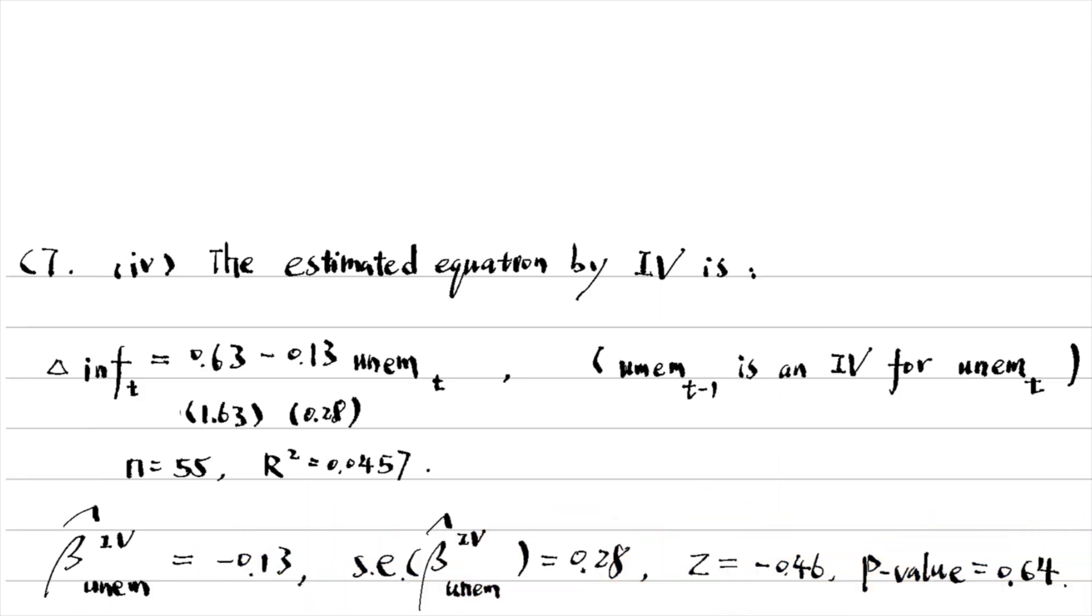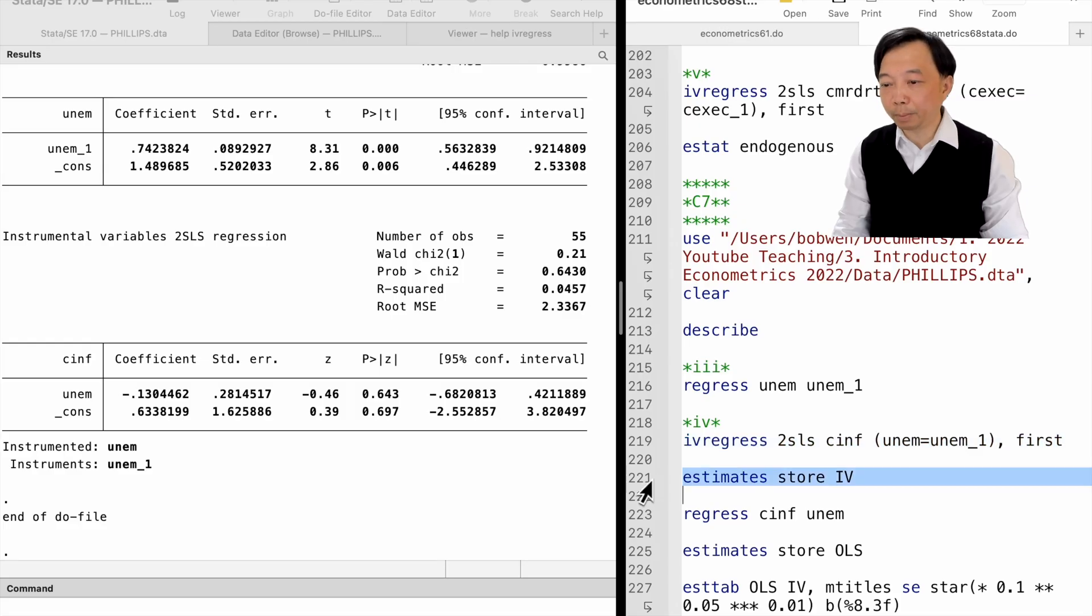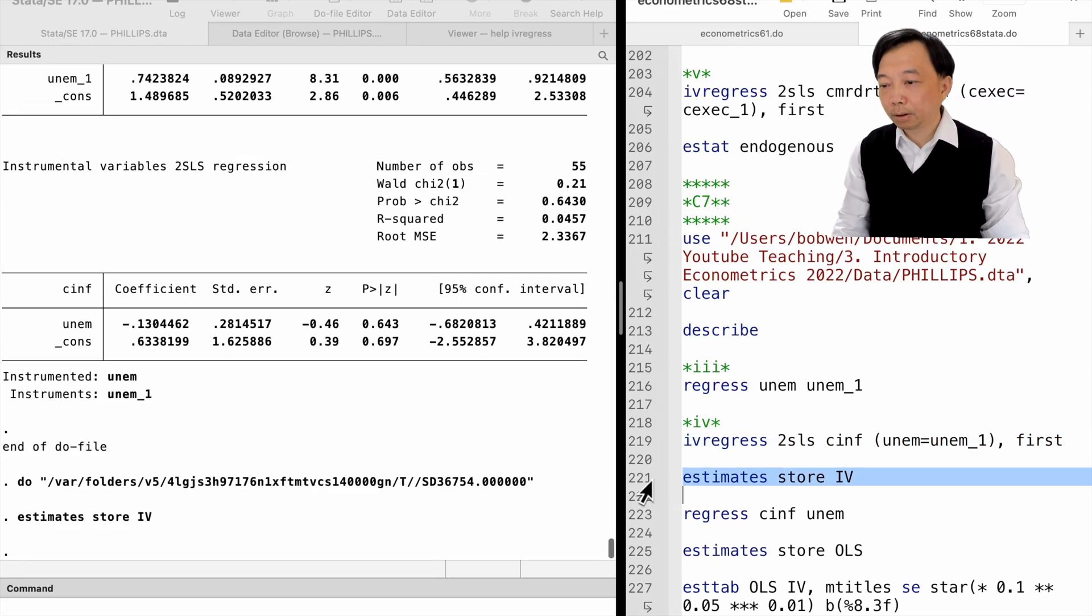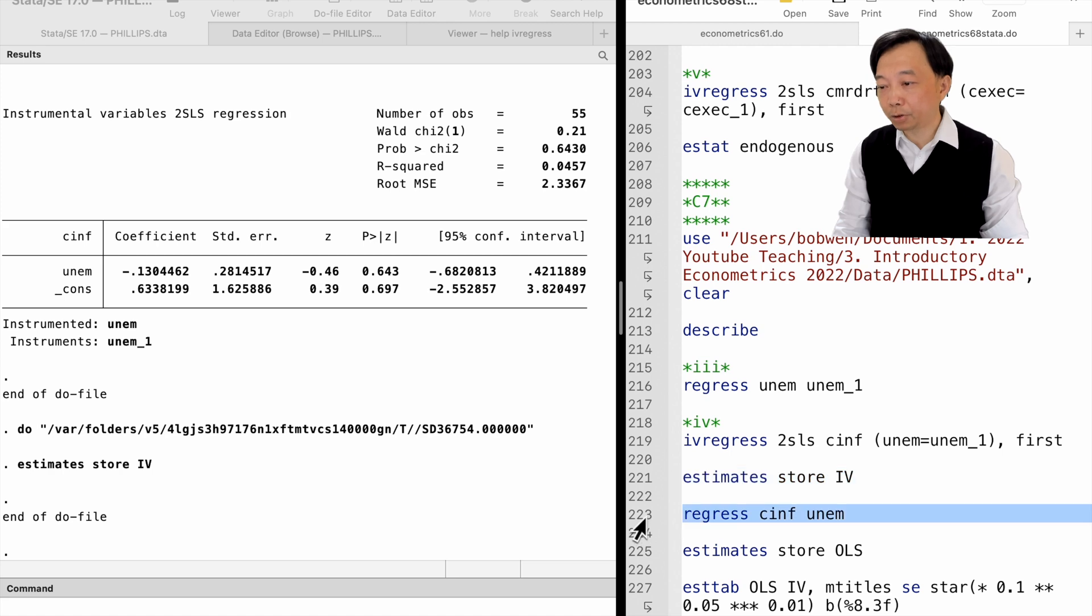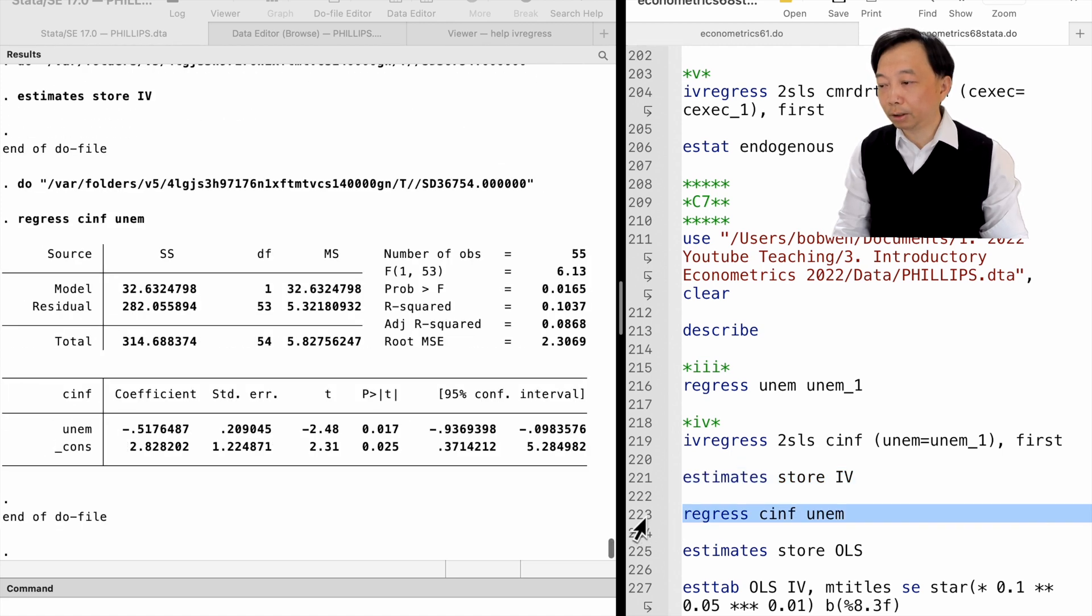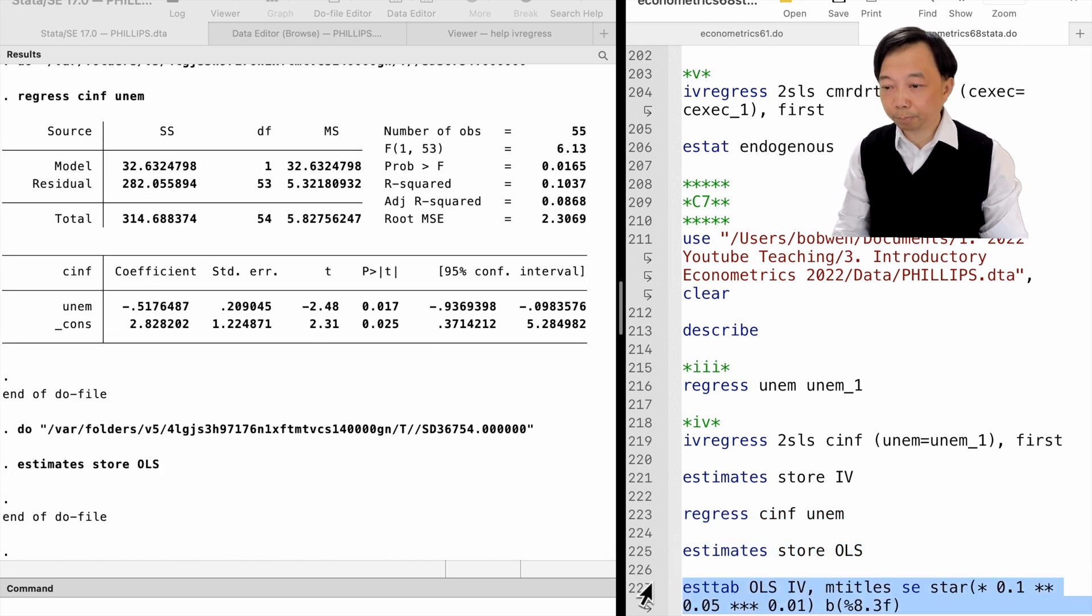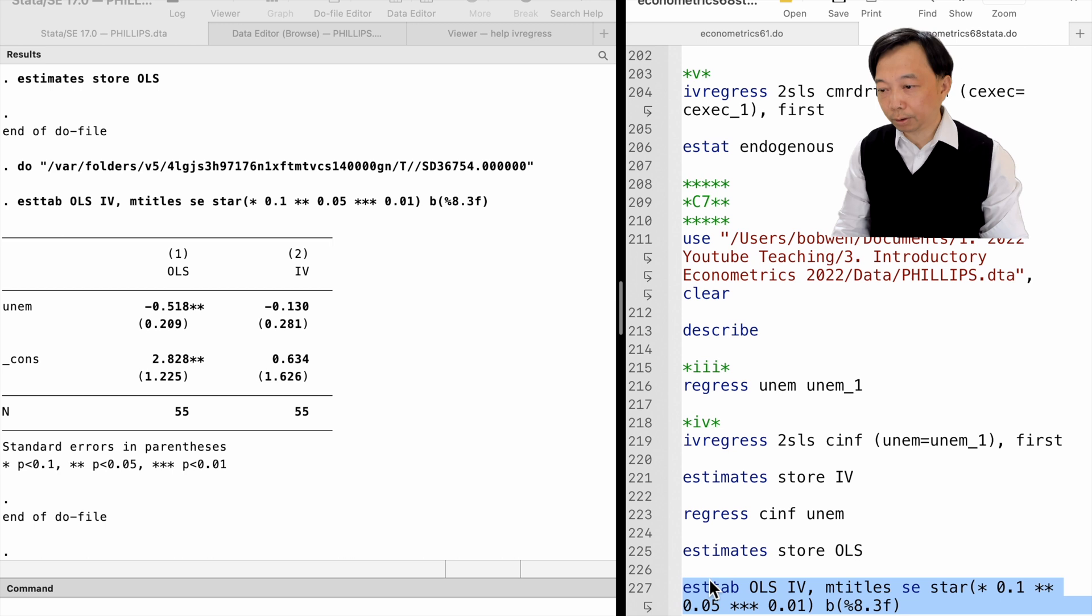We can compare the estimates in the table. Compared with the expectations augmented Phillips curve equation in example 11.5, the trade-off between inflation and unemployment is smaller and insignificant by IV estimation.